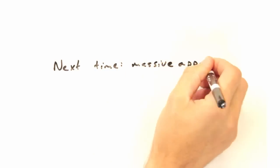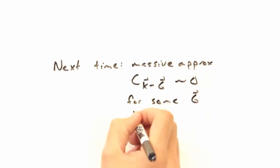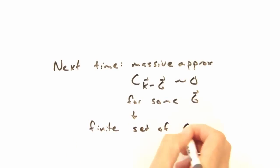That's a terrible idea, Eric. Next time, we'll figure out which c sub k minus g coefficients are non-zero, and simply just throw the rest out.